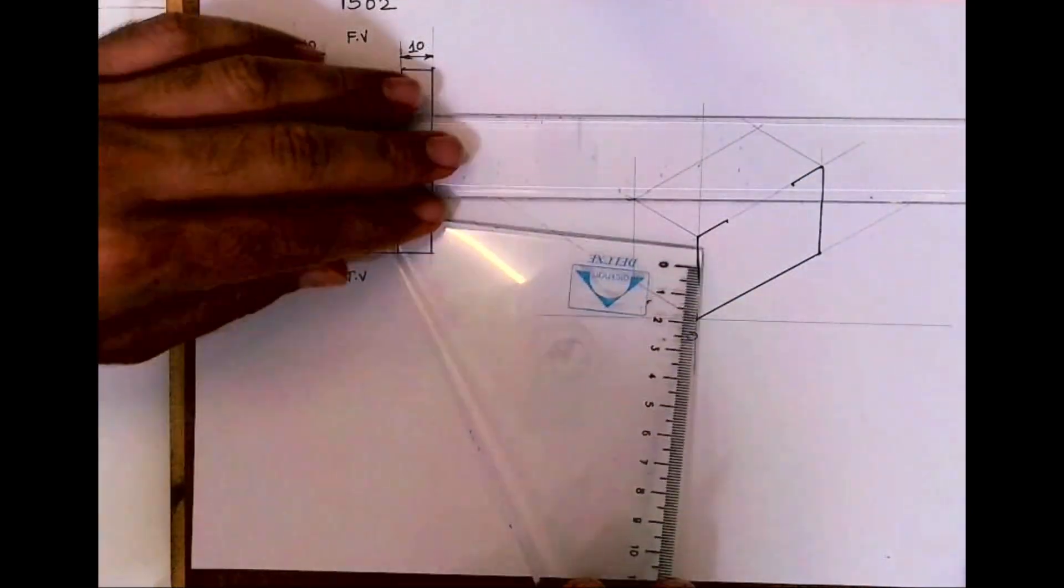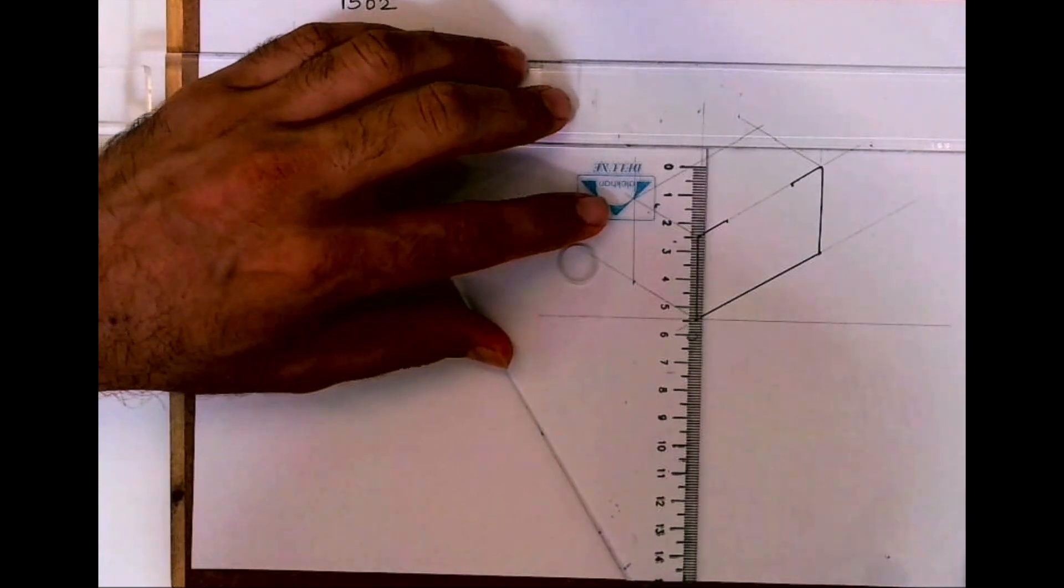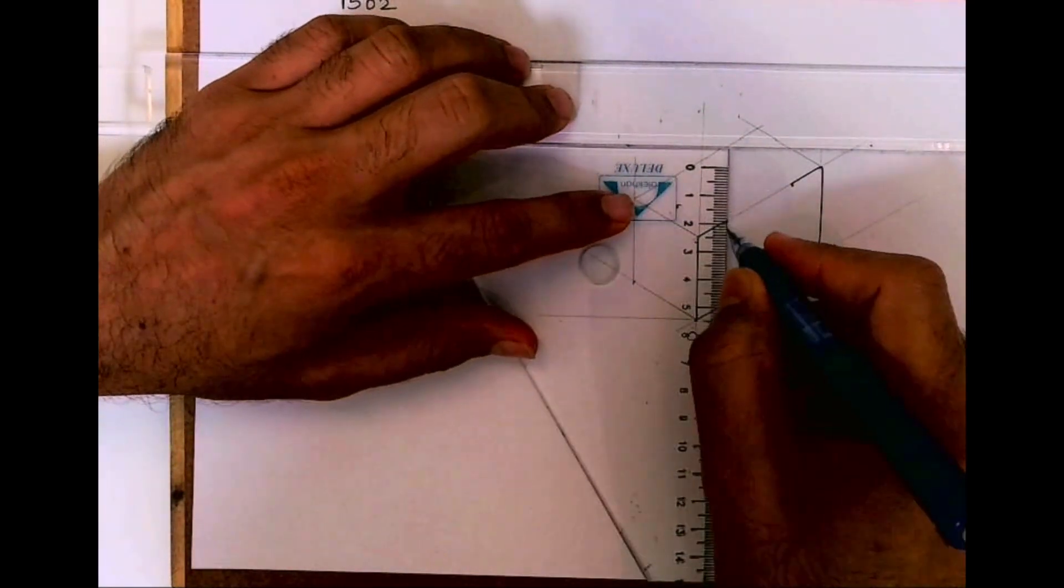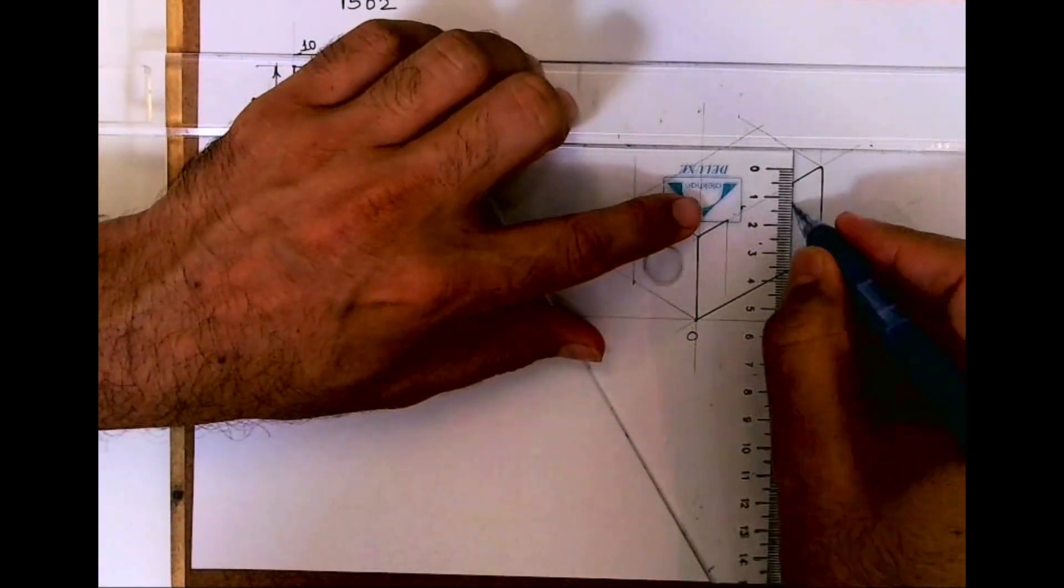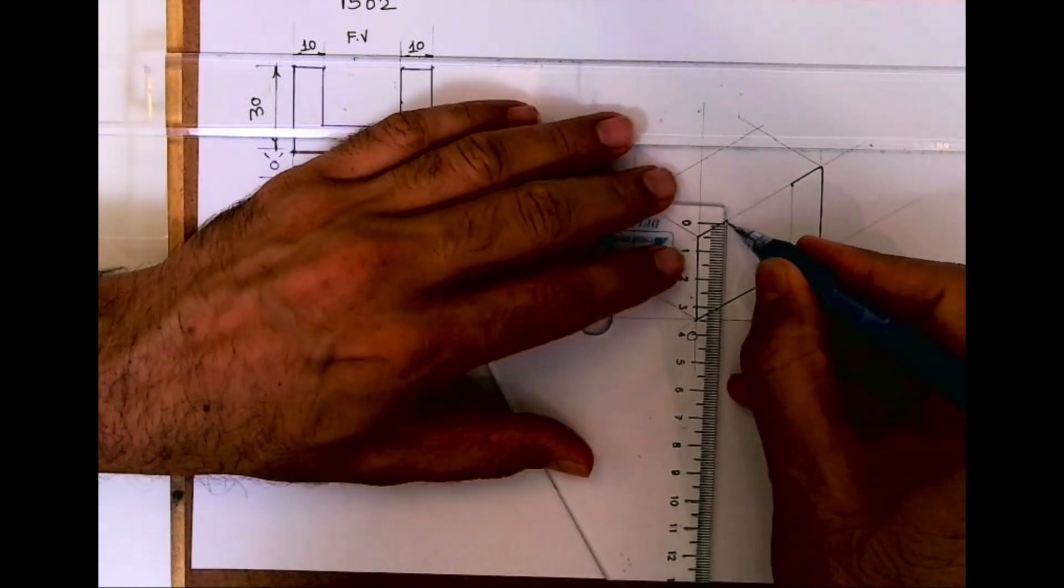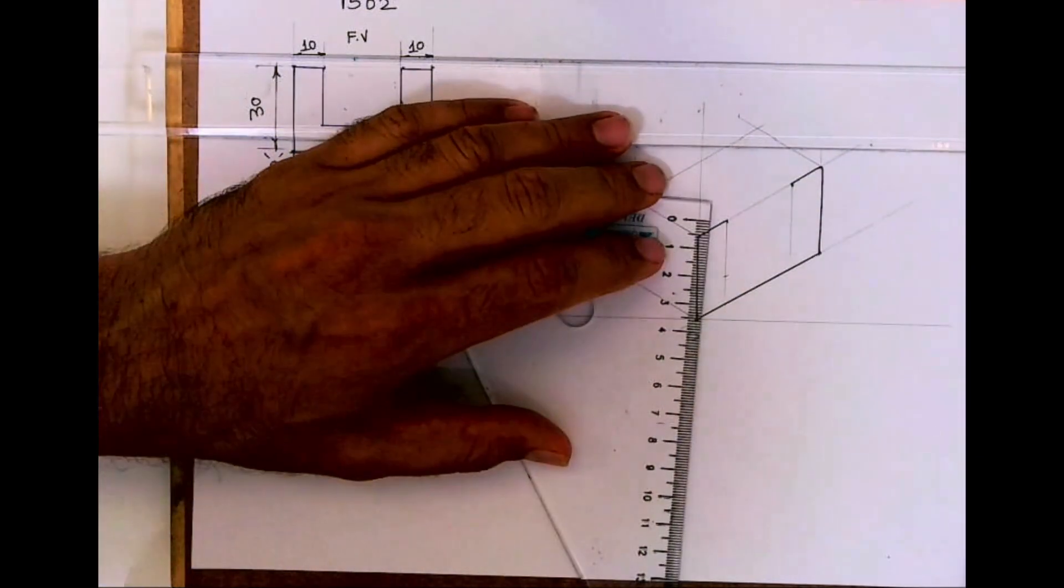Now 30 minus 10, it would be 20. So you go down by 20, so you mark 20 here.